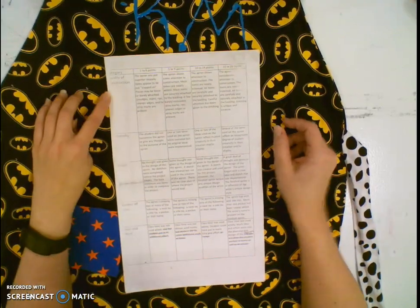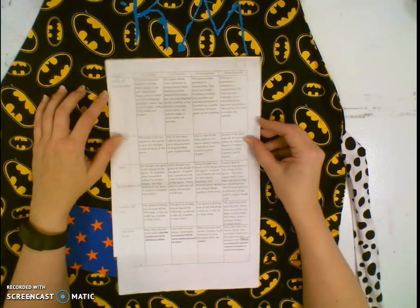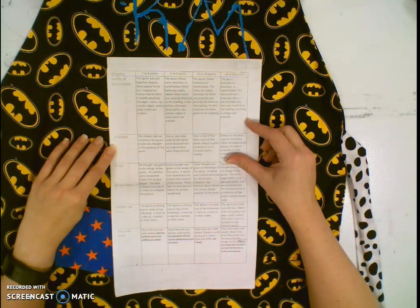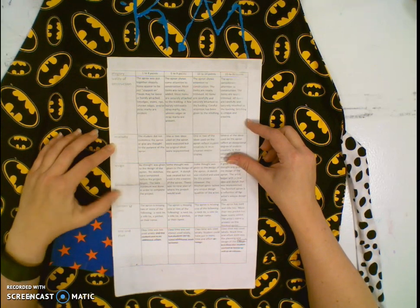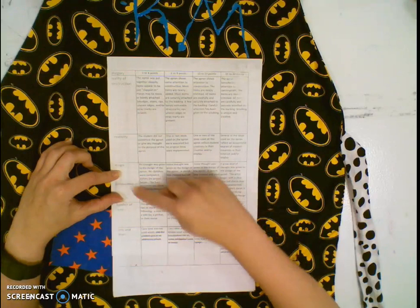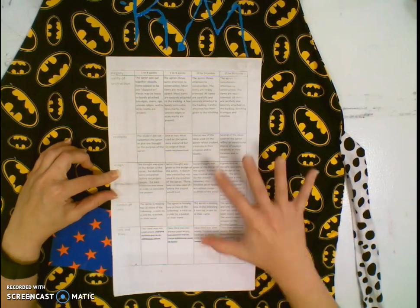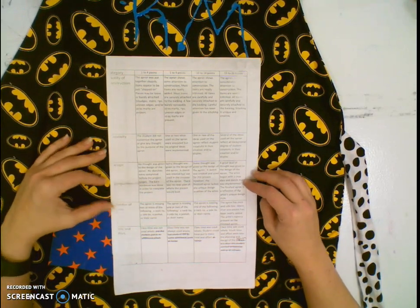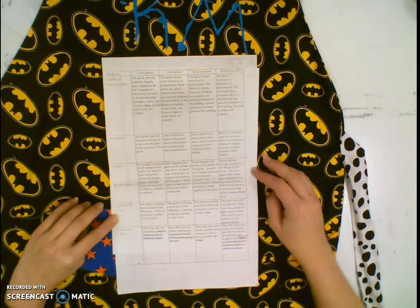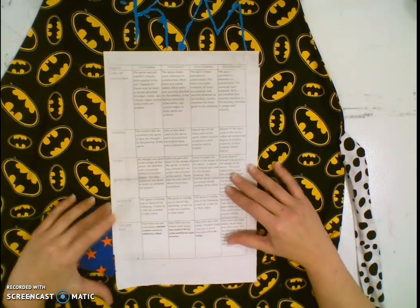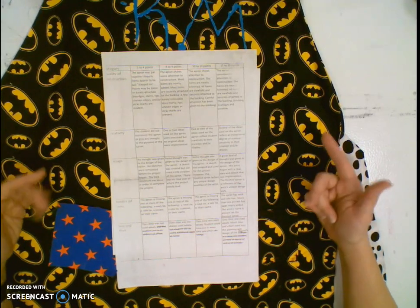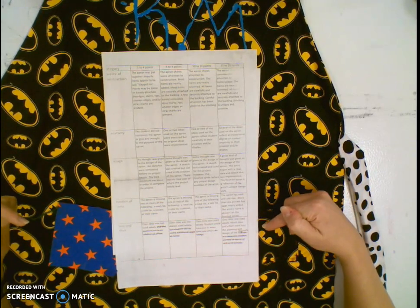Let's look at the different categories. We have quality of construction, which is how well your apron was designed. Creativity - how much thought and detail did you put into it. The design goes right along with that. Did you carefully construct everything? Number of items is pretty straightforward. Do you have all the things that you need?